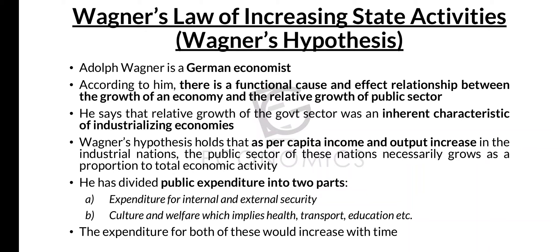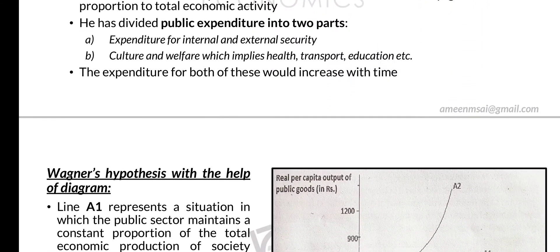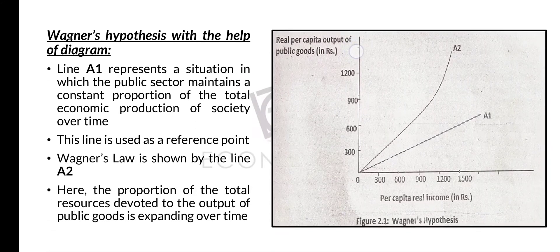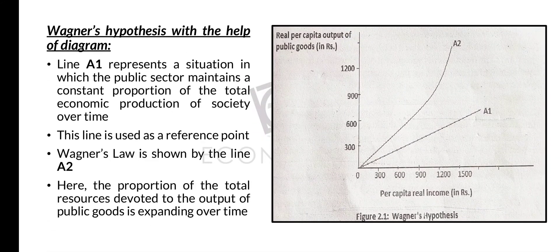The culture and welfare expenditure deals directly with the people and citizens. What Adolf Wagner put forward is that the expenditure for both of these parts increases with time. He also used a graphical representation in order to prove his theory.